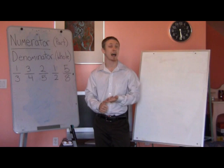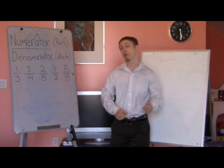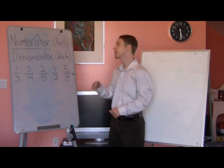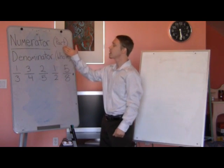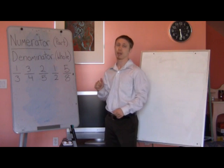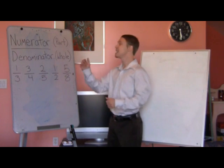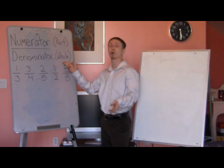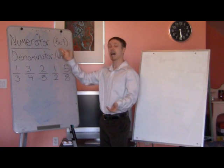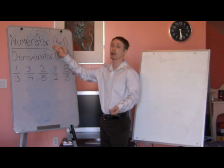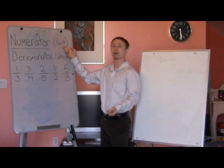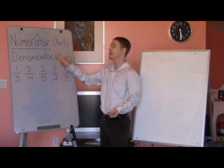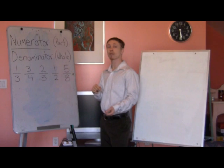Before we do that I would like to review what we did last class, just to make sure everyone remembers what we were working with. We talked about writing fractions. When you write fractions, the denominator goes on the bottom — and the way we remember the denominator is that it is the whole. And then on the top we have the numerator. The numerator is the part. So we have the part and the whole, the numerator and the denominator. And that's how we write fractions.